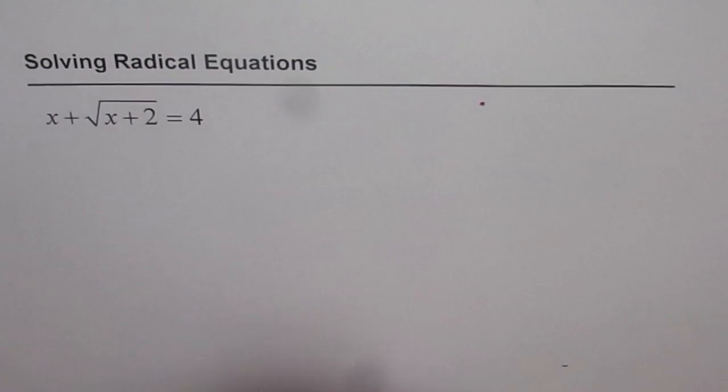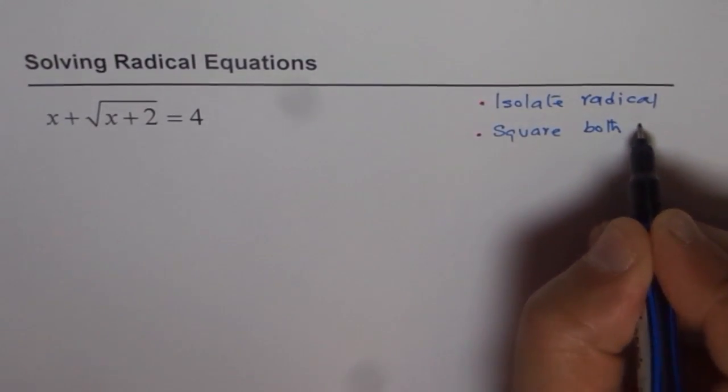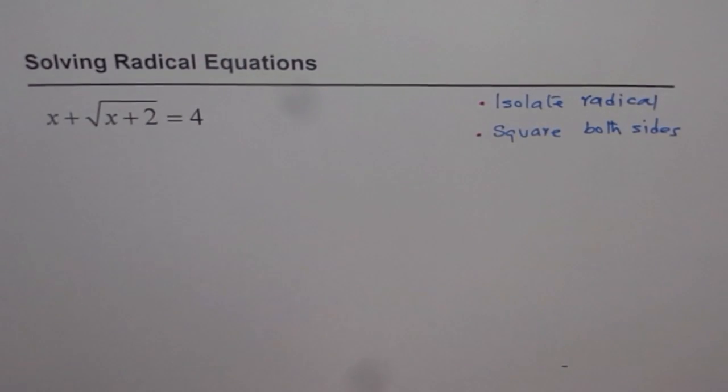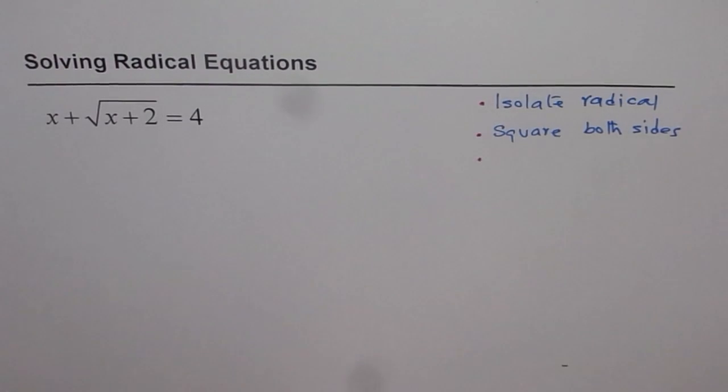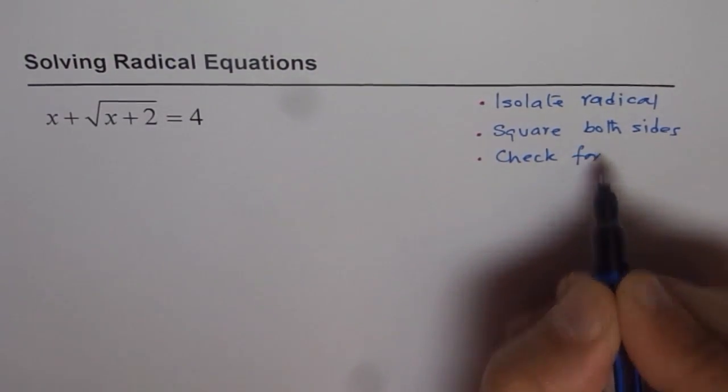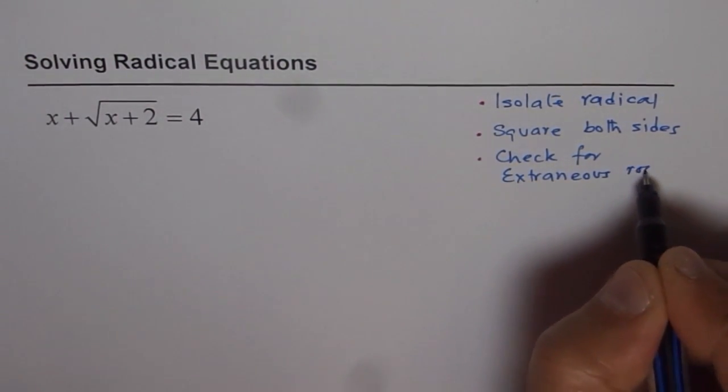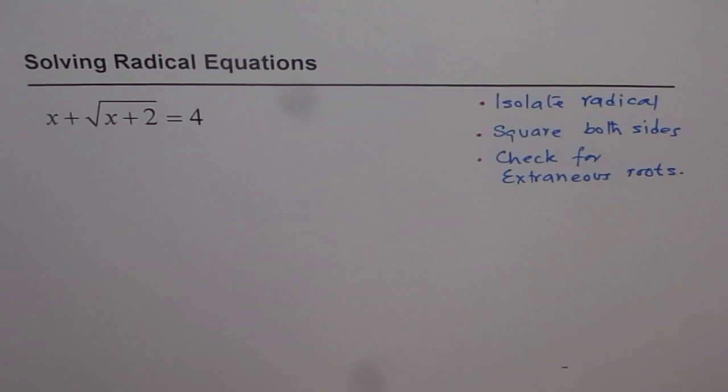The first step, let me write down three steps here first. The first step is isolate radical. Step number two is square both sides. Step number three, once you solve for the variable, then you should check for extraneous roots. You need to reject them.